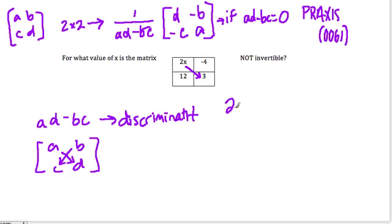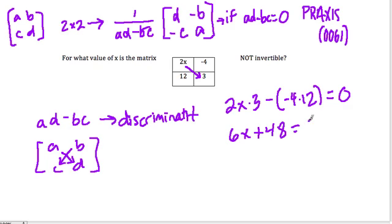So when is 2x times 3 minus negative 4 times 12 equal to 0? What value of x makes that happen? So let's simplify this.